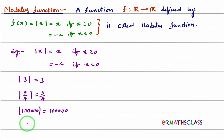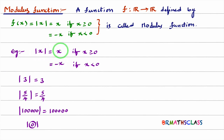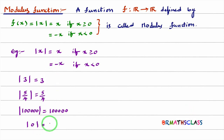Now, modulus of 0. The expression in place of x is 0, so x equals 0. You observe the first case: when x is greater than or equal to 0, we choose the first function. Modulus of x is x. So modulus of 0 is 0. Till here, no confusion.